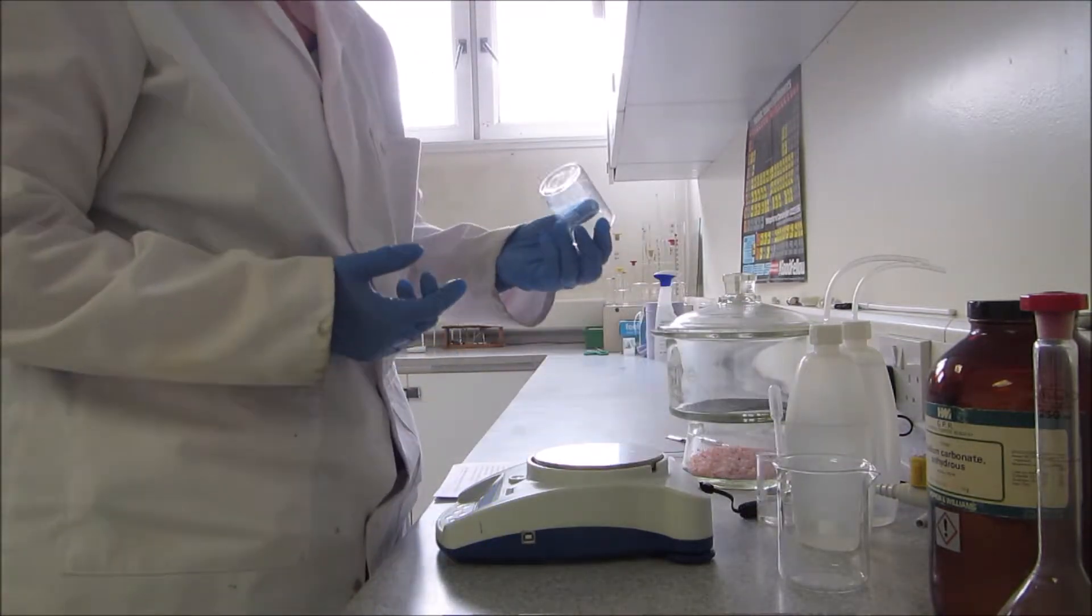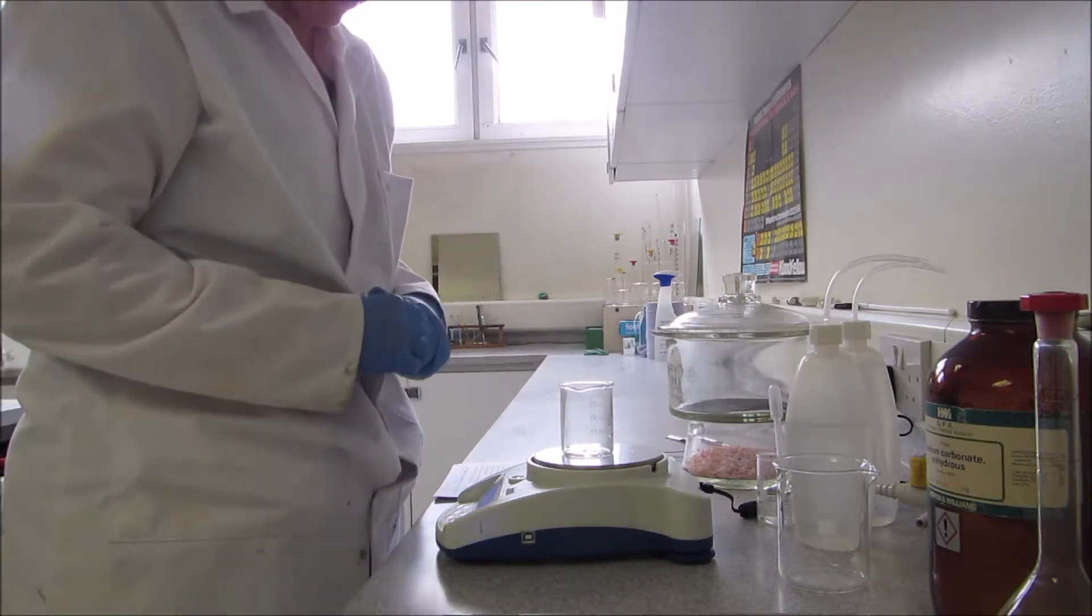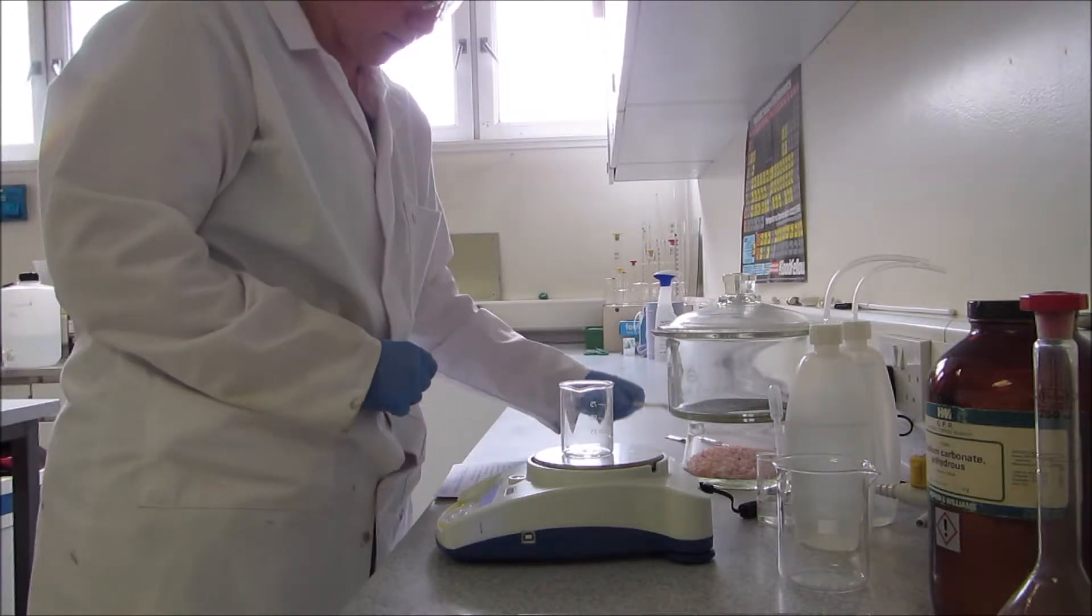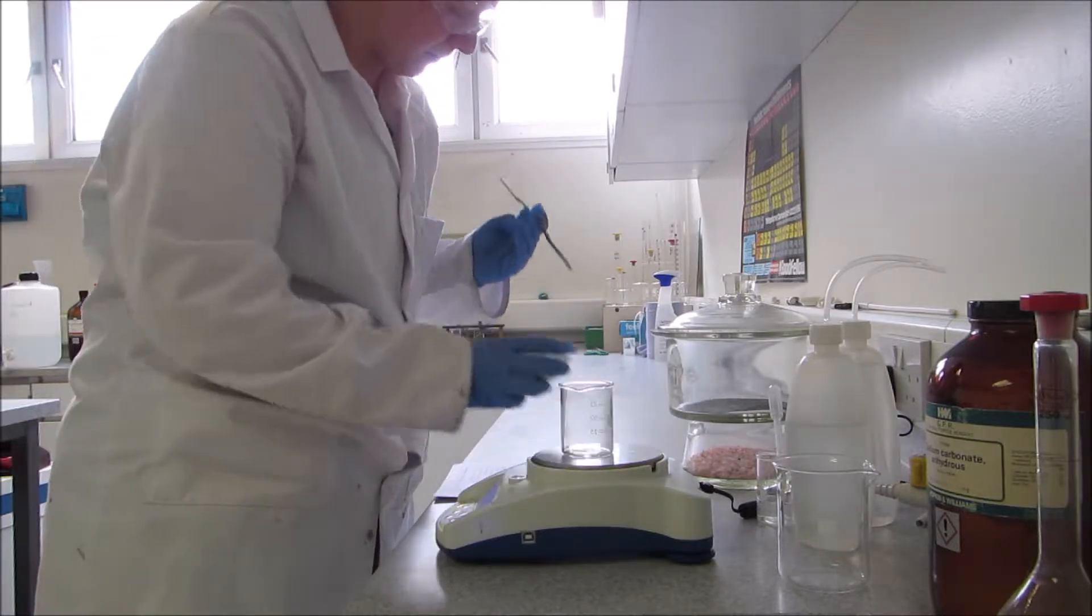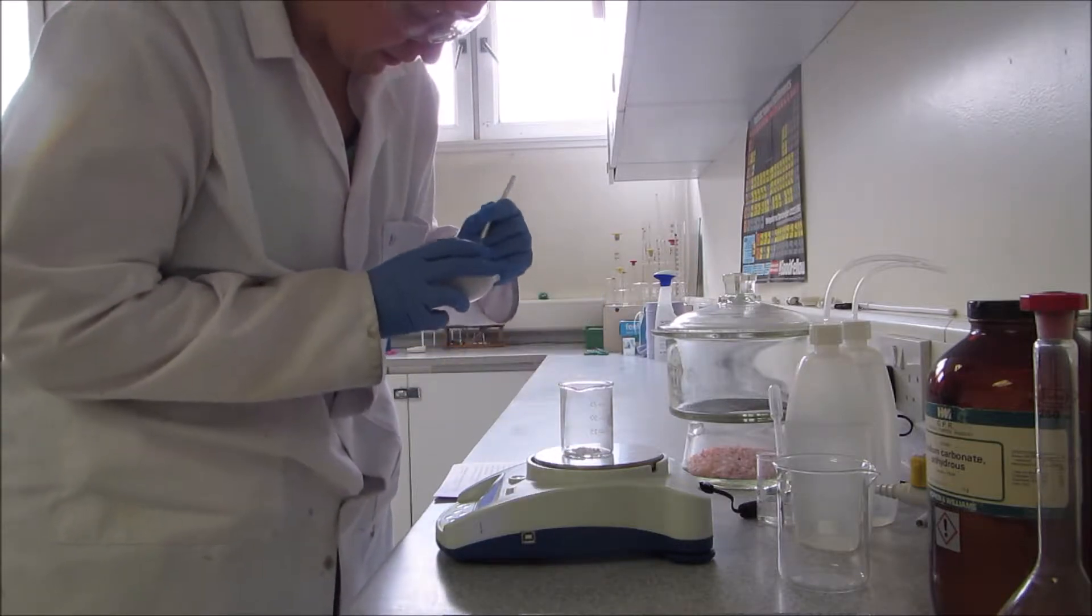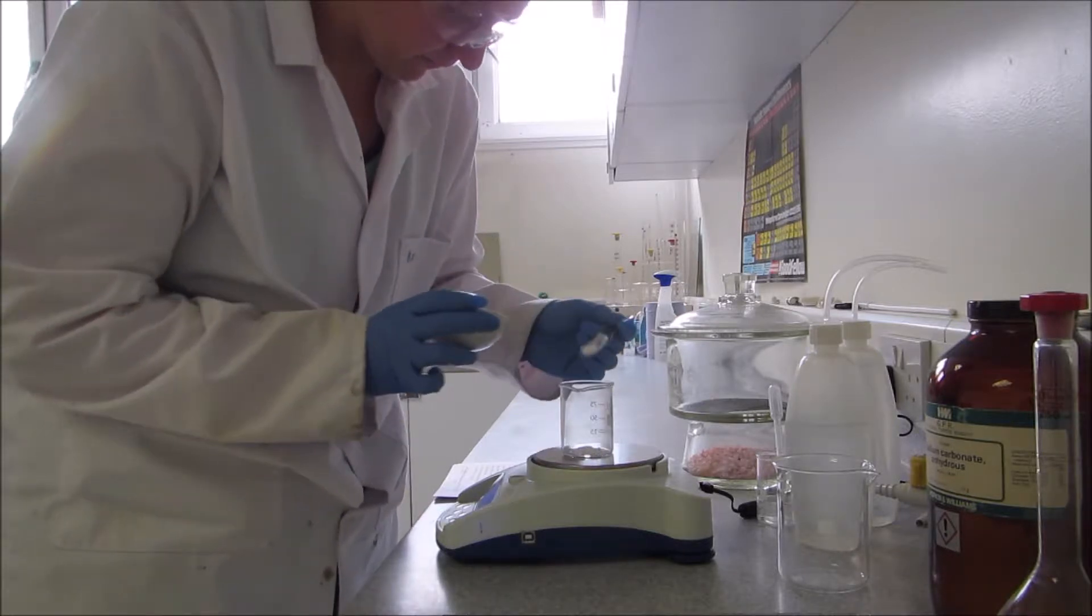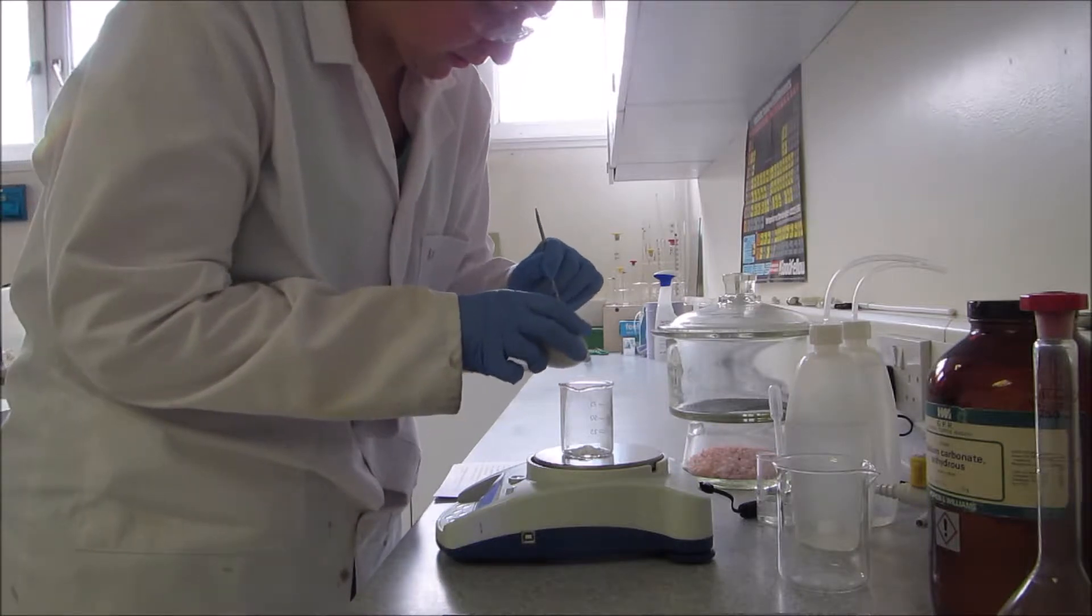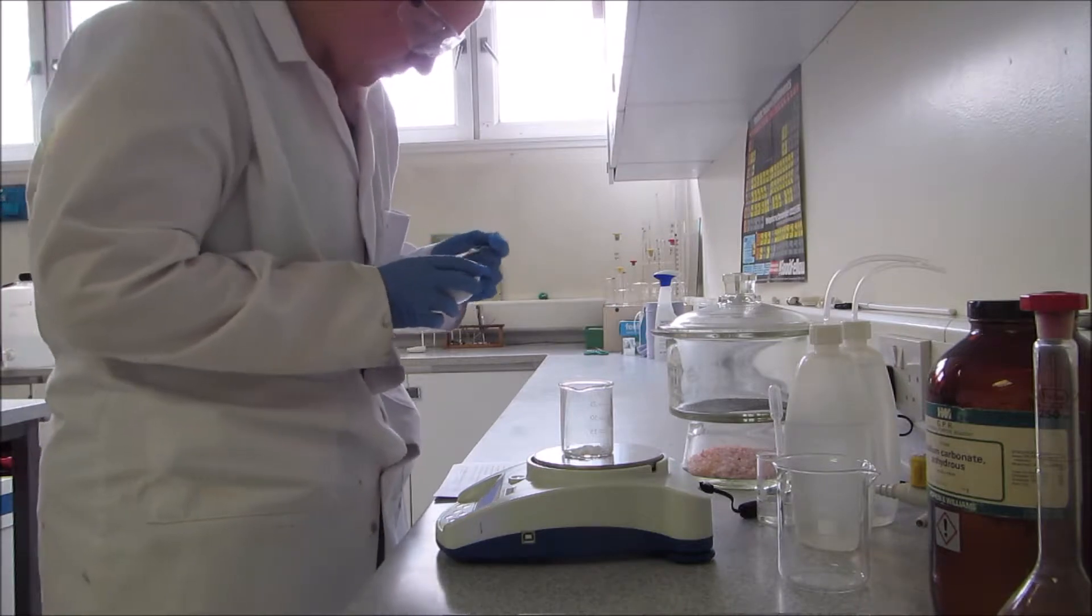The first vessel I'm going to measure into is the small beaker here. So if I put that on the scales and I tare it, I'm going to want to measure somewhere between 1.2 and 1.4 grams of sodium carbonate. 1.2 exactly.